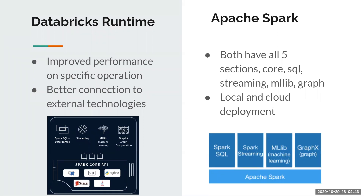As you can see, both Databricks Runtime and Apache Spark have all five components: Spark SQL, Spark Streaming, MLlib, GraphX, and Apache Spark Core. While the image on the right does not show it explicitly, all the languages in the Spark Core API are compatible with Apache Spark normally. You can use R, Scala, and Python to work with both Spark and Databricks Runtime.